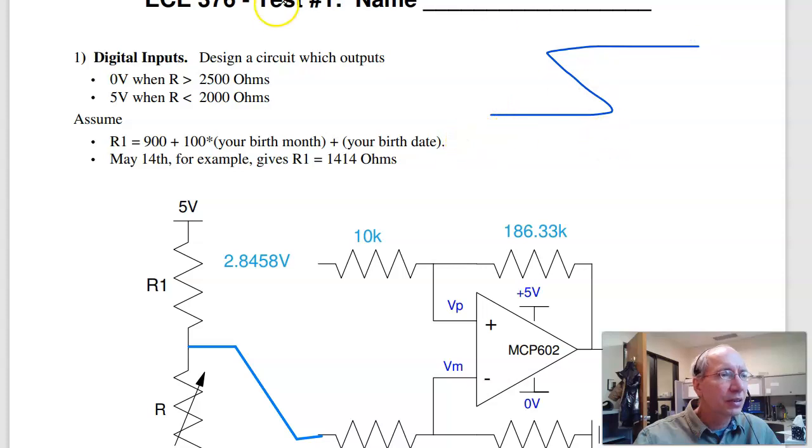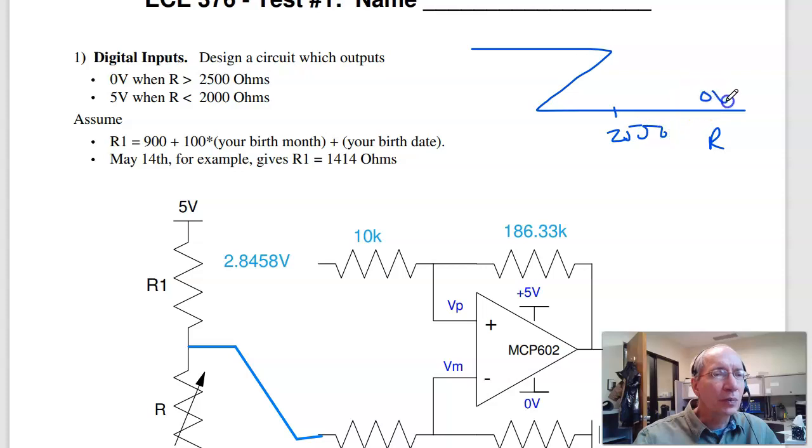So what you should get is something kind of like this. When R is bigger than 2,500 ohms, output zero volts. When it's less than 2,000 ohms, output five volts. And you get this kind of hysteresis pattern, a little Z pattern. That's the Schmitt trigger.